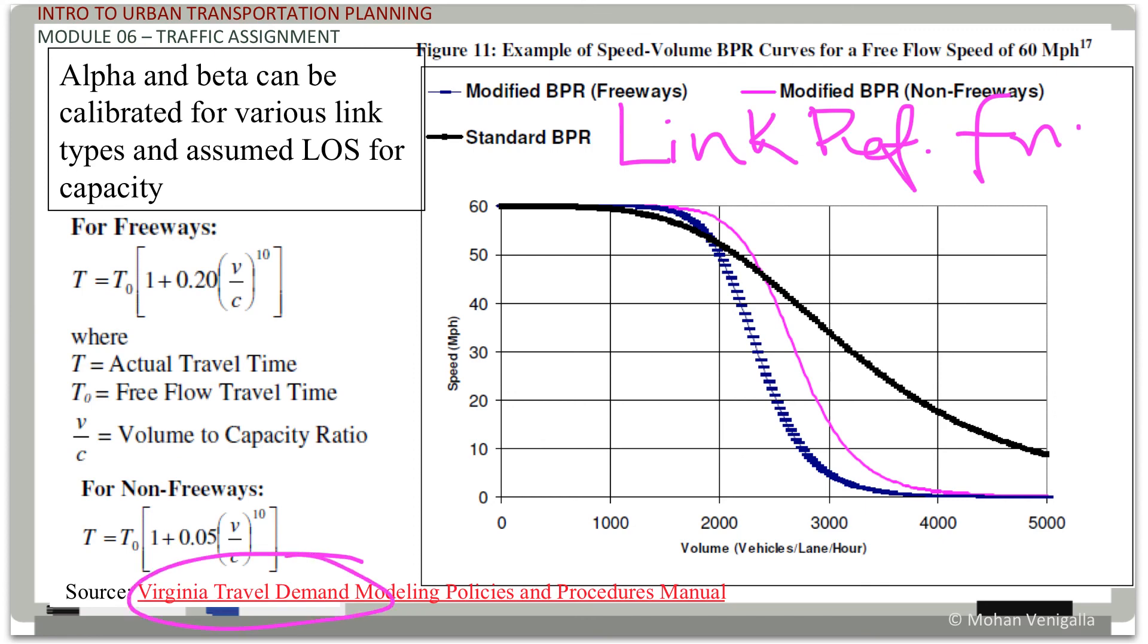For freeways, they use alpha of 0.20 and beta of 10. So for non-freeways, alpha of 0.05 and beta of again 10. So these are some of the link performance functions. We will be using standard one in our problems, which we will start seeing from video number six, which is the next one.